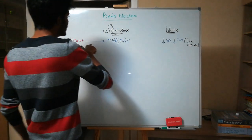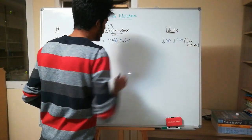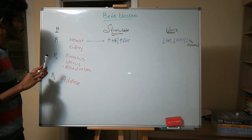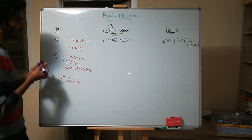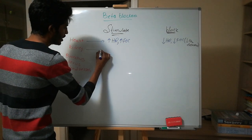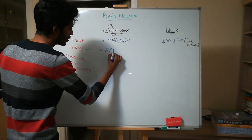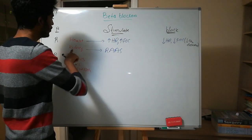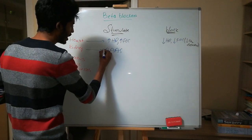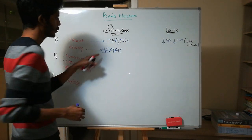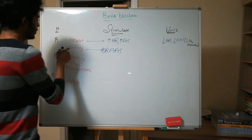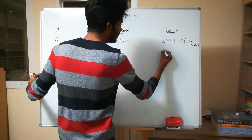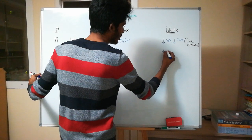Now let's see the effect on the kidney. If I stimulate beta 1 receptors of the kidney, it will activate the renin-angiotensin-aldosterone system — that is RAS. When blocking beta 1 receptors of the kidney, there will be decreased activity of RAS.